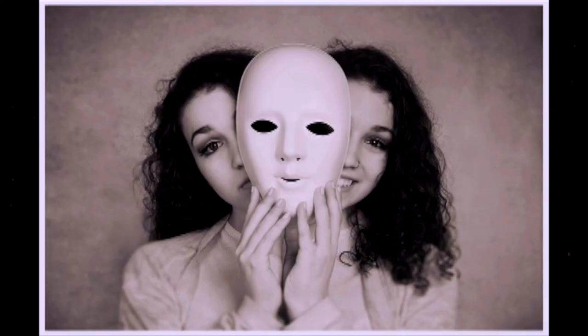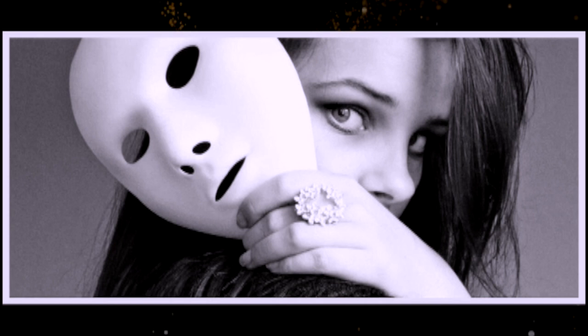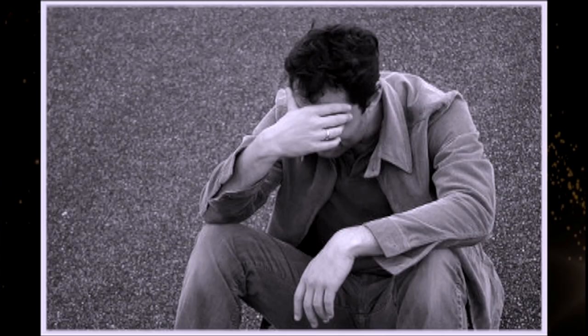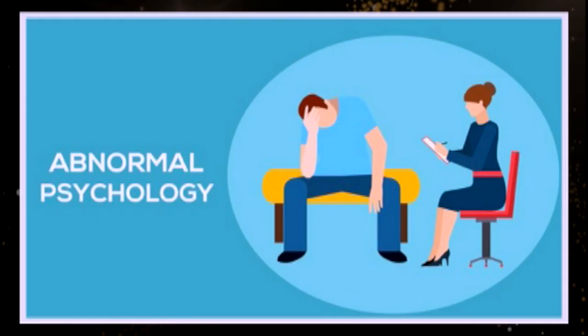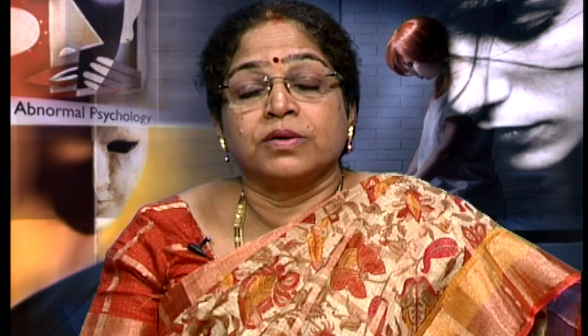We then move on to dissociative and somatoform disorders. We talk about the nature and types of dissociative disorders, like dissociative amnesia, dissociative fugue, and dissociative identity disorder. We also talk about somatoform disorders, including hypochondriasis, somatization disorder, pain disorder, conversion disorder, Munchausen syndrome by proxy, and body dysmorphic disorder.